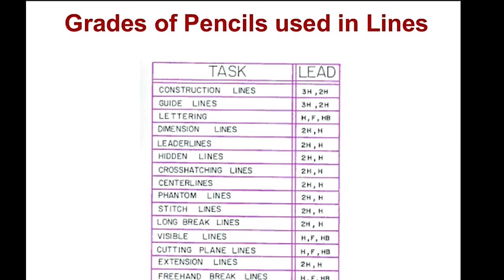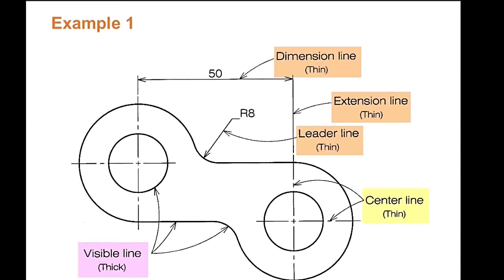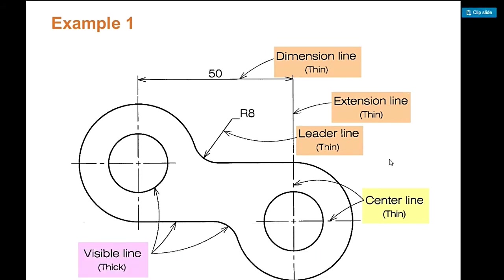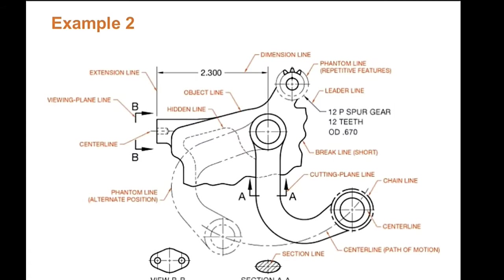For pencils, we don't need many points, just one thick and one thin. The thick is for object lines, the thin is for hidden lines, dimension lines, and center lines. Like this with an object, the object line is thick, and the dimension lines, projection, and center lines are thin.